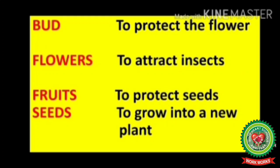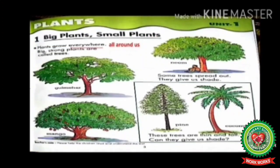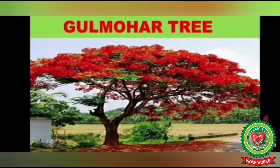Fruit: to protect seeds. Seeds: to grow into a new plant. So these are the functions of the parts of a plant. Now children, open your Enjoying Science book, page number three. Let's read: plants grow everywhere — underline everywhere, write down all around us. Big, strong plants are called trees.